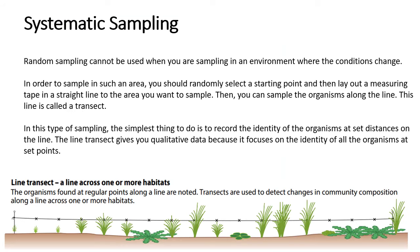So those are random sampling techniques — you can use a quadrat or you can use the mark release recapture method. In systematic sampling, it's a very different story. You use systematic sampling in an environment where conditions are likely to change. What you do is select a starting point and measure a tape in a straight line. You can see here in this image from the textbook that you have a measuring line, and then you simply sample the organisms along the line. This is called a line transect, and what it does is give you qualitative data because it focuses mostly on the identity of the organisms at set points.